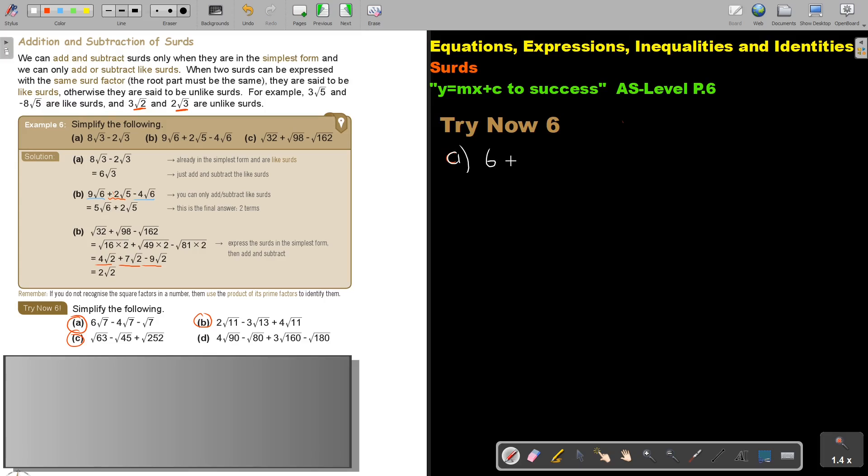So if I'm saying 6 square root 7 minus 4 square root 7 minus, they are all like. Can you see that? And there's a 1. So basically, I can just say 6 minus 4, that's 2, minus 1 and that will just be 1. And I can just write square root 7. Easy.